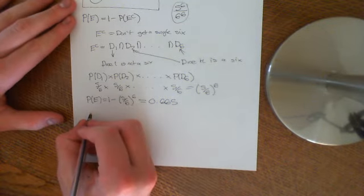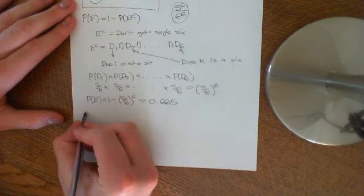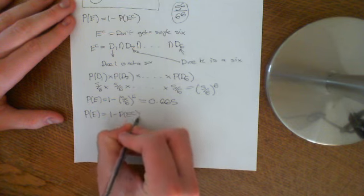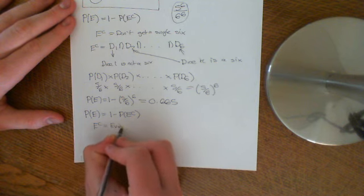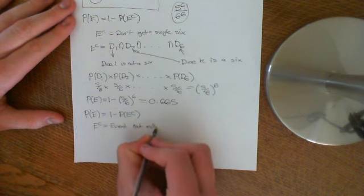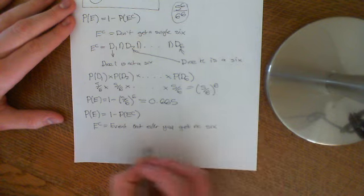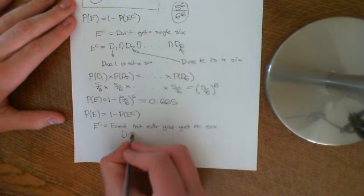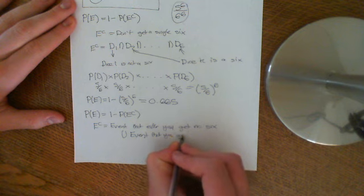Now let's do the probability of the second option, which is slightly more difficult. We use the complement: P(E) = 1 - P(E complement). E complement is the event that you get no sixes, union the event that you get only one six. These two events are totally disjoint.